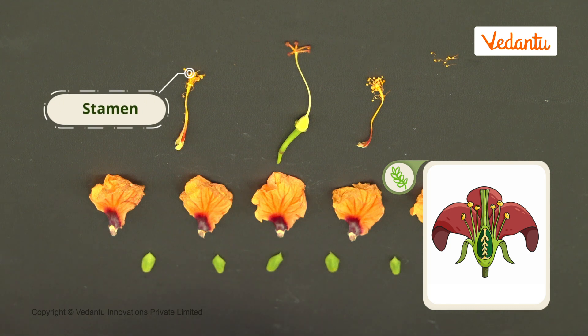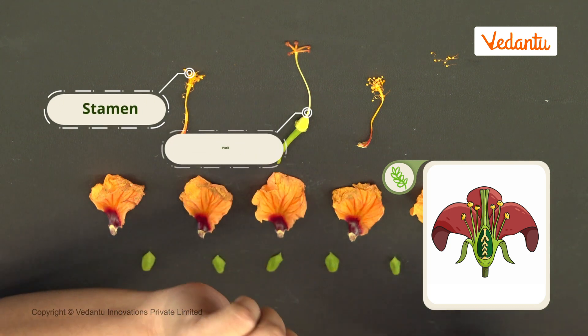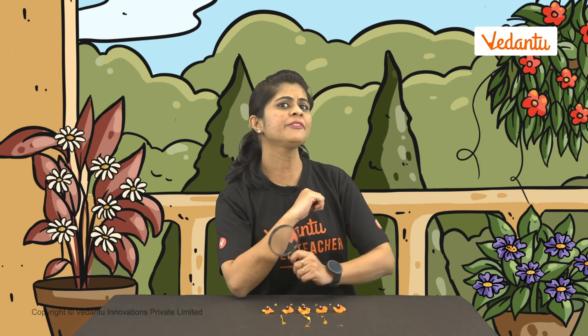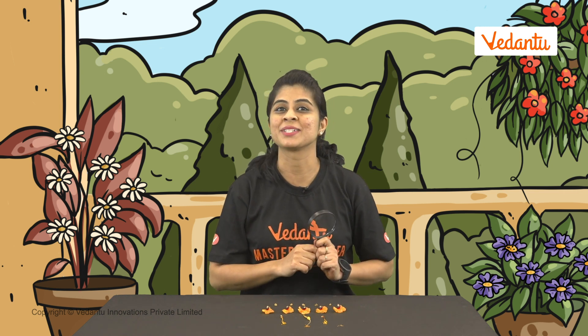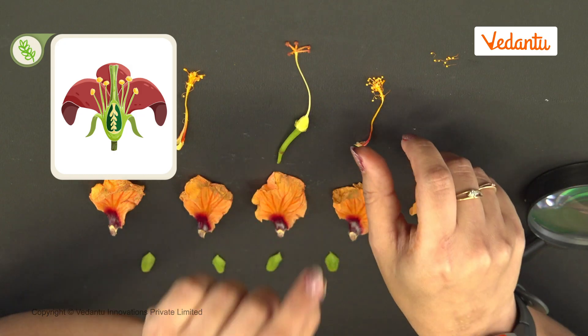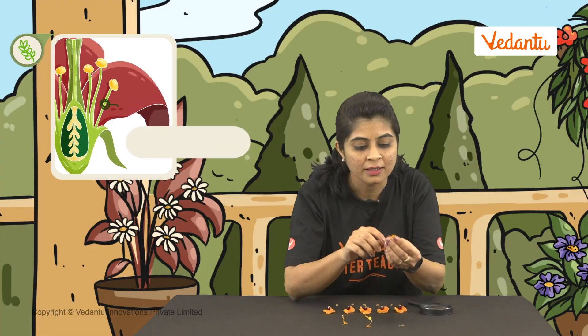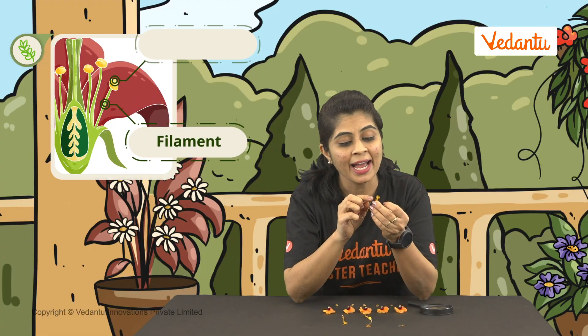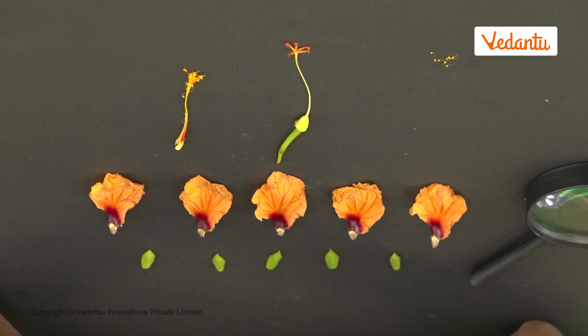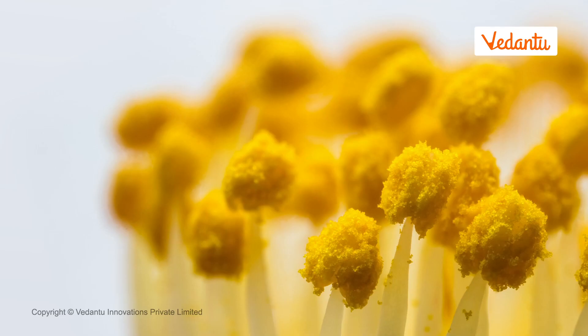Inside the petals are the stamen and pistils. How can we distinguish between the two? Often, stamens are more in number compared to pistils, but that's not always the case. If you look at the stamen, it has two parts: the filament and the anther. The anther often has dust-like material on it — that's the pollen.